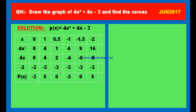Take x equals minus 1: 4 times minus 1 whole square is plus 4; 4 times minus 1 is minus 4; constant is minus 3. 4 minus 4 is 0, minus 3 gives minus 3. Point: (minus 1, minus 3). Take x equals minus 2: 4 times minus 2 whole square is 16; 4 times minus 2 is minus 8; constant is minus 3. 16 minus 8 minus 3 equals 5. Point: (minus 2, 5). Since P of x is negative at x equals minus 1 and positive at x equals minus 2, there is a zero between them.